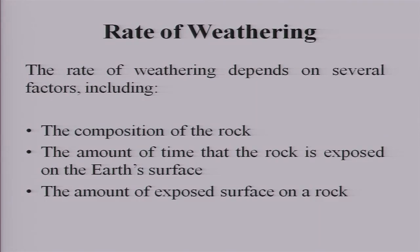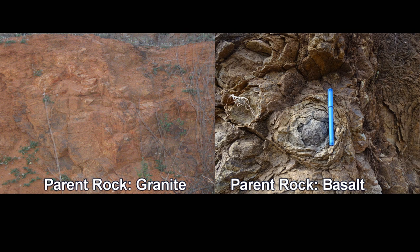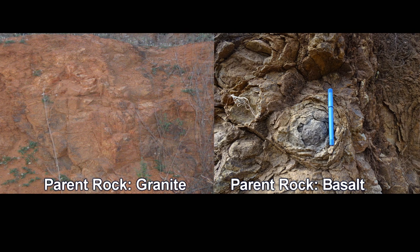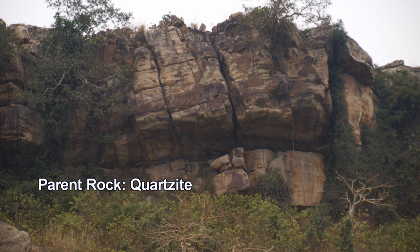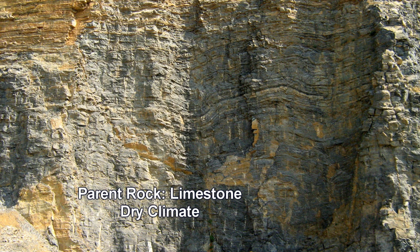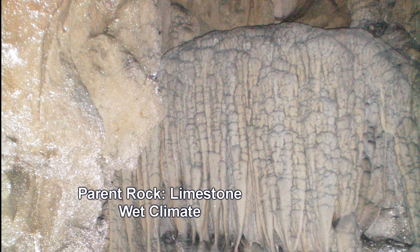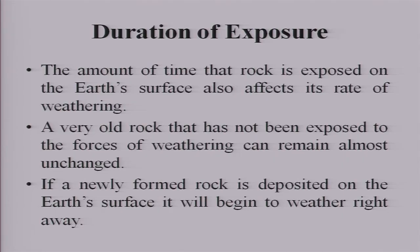What factors does the rate of weathering depend on? First, the composition of the rock — two different rocks in the same climate can weather differently depending on their mineral makeup. For example, limestone is a stable rock in a dry climate but weathers easily in a wet climate like Meghalaya where there is heavy rainfall. Second, the duration of exposure — the amount of time the rock is exposed on the earth's surface also affects the rate of weathering.